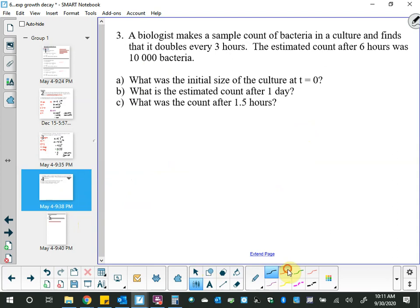So next question. Alright. Biologist makes a sample count of bacteria, finds it doubles. Okay, so that indicates that I dig out this rather than the money. So it says a biologist makes a sample count of bacteria and a culture and finds that it doubles every 3 hours. The estimated count at the end is 10,000 bacteria and that was for 6 hours. And the question is, what is the initial size of the culture at t equals 0? So this right here, initial size, initial, and t equals 0 mean exactly the same thing. So basically it's redundant and I'm asking you to find the P-value.